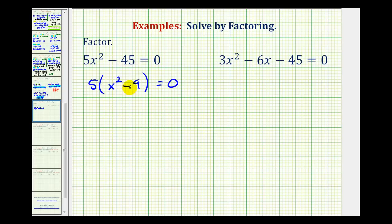Notice once we factor out the 5, the remaining binomial factor is a difference of squares. x² is a perfect square, 9 is a perfect square, and we have a difference.